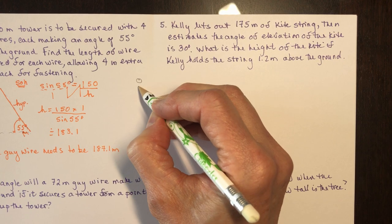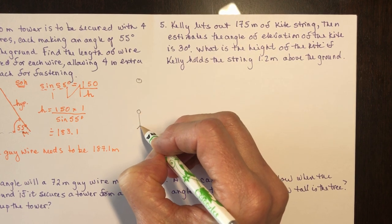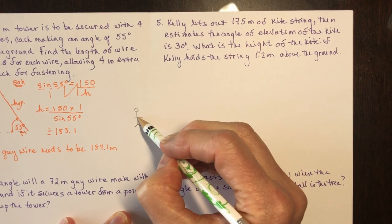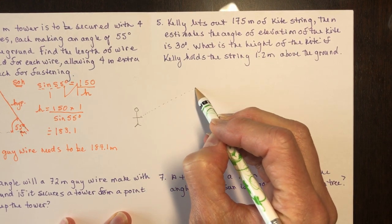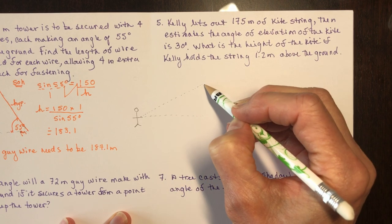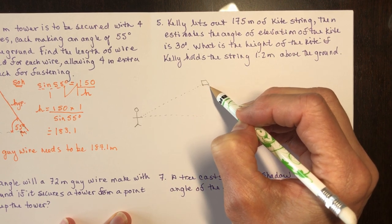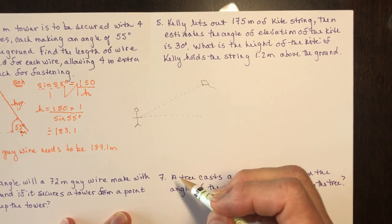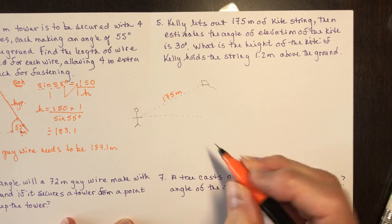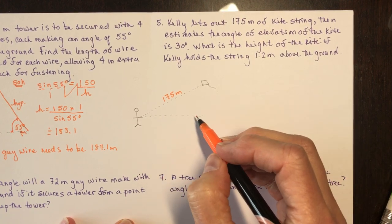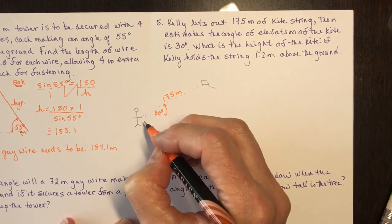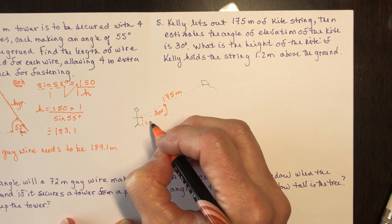Here's Kelly standing and holding the kite string. She lets out 175 meters of string at a 30-degree angle of elevation, with the kite up there. She holds the string 1.2 meters above the ground. When I solve the right triangle, I'm finding X — the height above the 1.2-meter hold point. I'll need to add 1.2 meters at the end to get the total height above ground. I'm using opposite and hypotenuse, so that means sine.